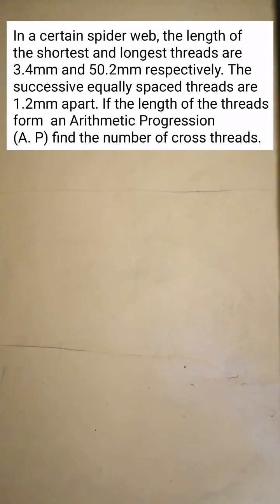In a certain spider web, the length of the shortest and longest threads are 3.4 mm and 50.2 mm respectively. The successive equally spaced threads are 1.2 mm apart. If the length of the threads form an arithmetic progression, find the number of cross threads.